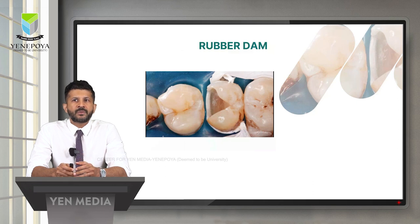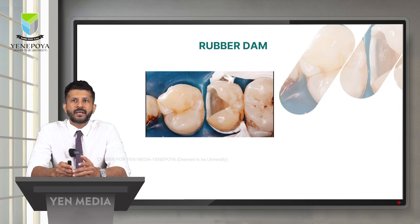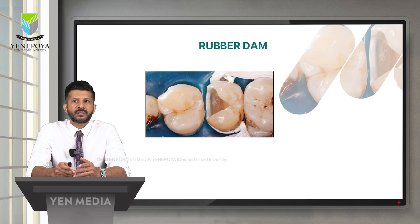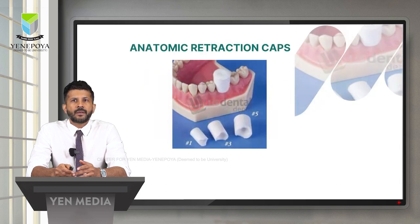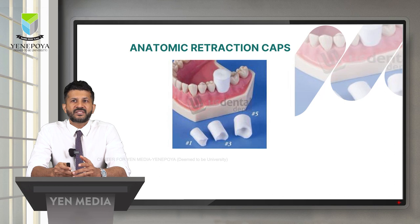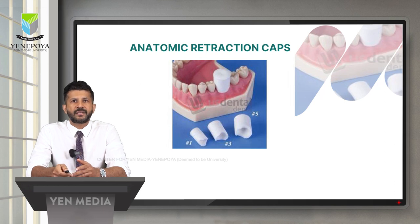Use of a rubber dam is not only an asset in preparing the tooth but also when the impression is made. The use of heavy, extra heavy, or especially heavy rubber dam together with specialized clamps helps to retract and protect the gingival tissue during preparation of the tooth, as well as providing isolation for subsequent restorative placement. Anatomic retraction caps follow the same principle as the rubber dam except that they are pre-shaped for easy placement between adjacent teeth; once in place, the patient bites on it, the physical pressure arrests hemorrhage and opens the sulcus for the final impression.